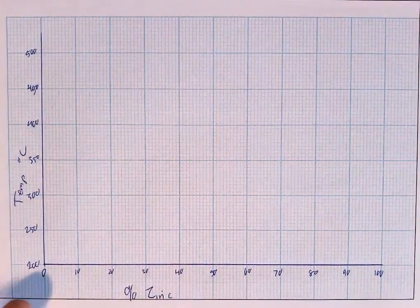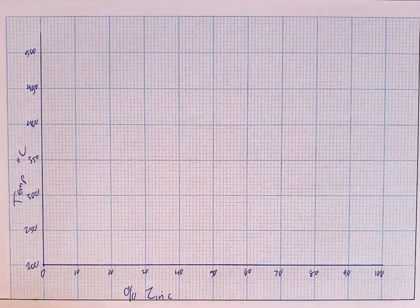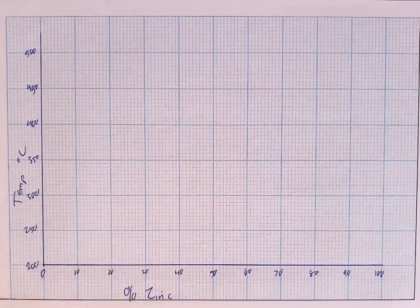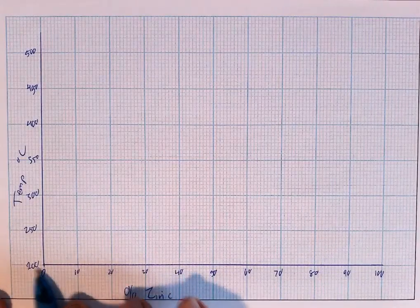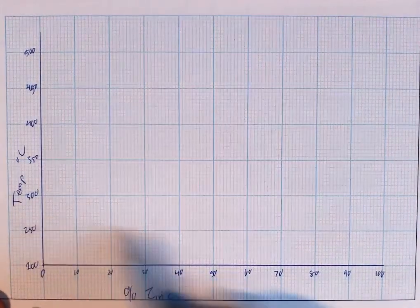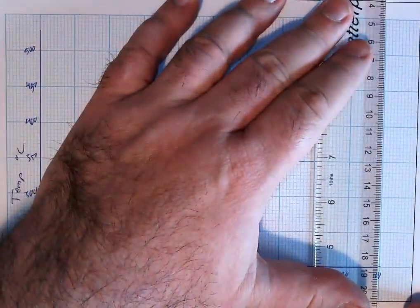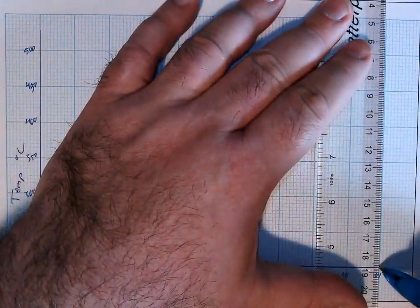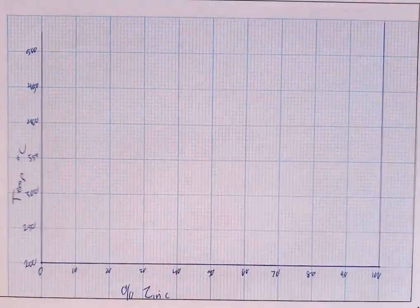Now I started at 200 because everything below that point there's no information to be gained from that. I'm starting from 200 because I'm only interested in the actual diagram itself and the actual graph. Everything below that it's just a pure solid and is of no interest to us whatsoever.